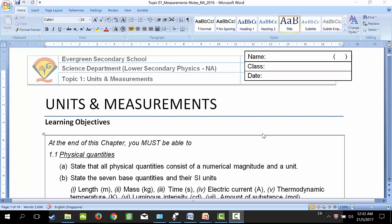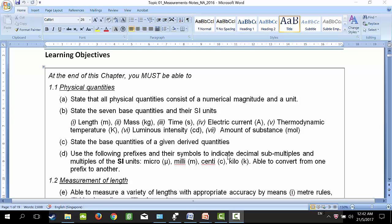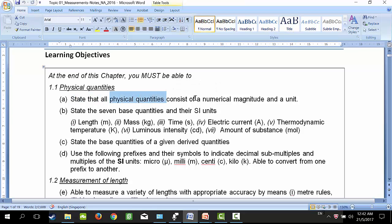Let's look at our notes. For the first topic, Units and Measurement, let's look at the objective of our learning. In unit 1.1, in physical quantity, there are 4 learning objectives. The first one, we must be able to state all physical quantities consist of a numerical magnitude and a unit.